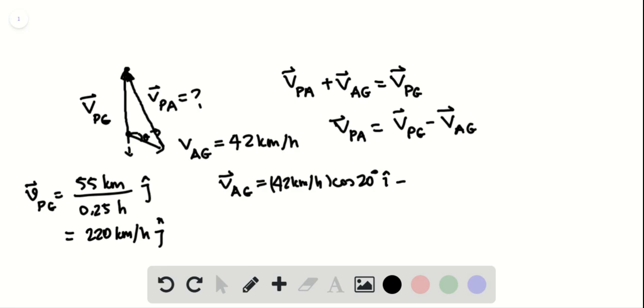The Y component is in the negative Y direction, so it's minus 42 kilometers per hour times sine 20 j-hat.